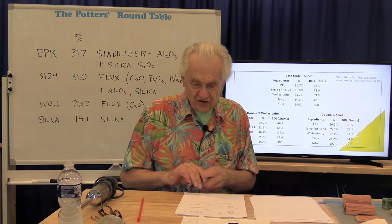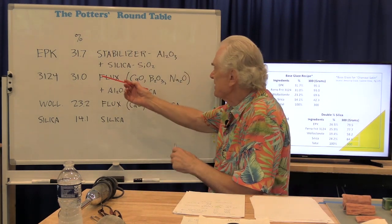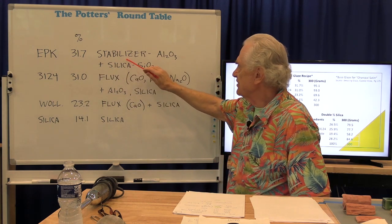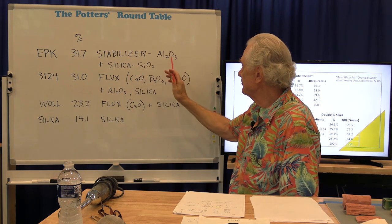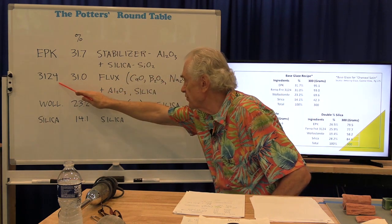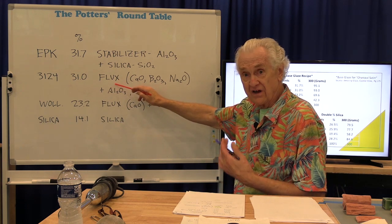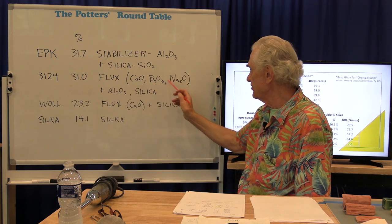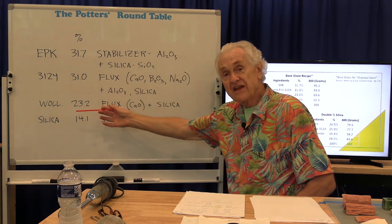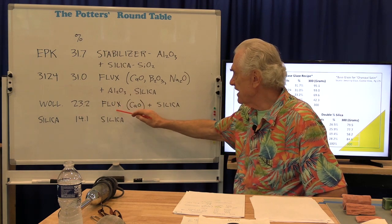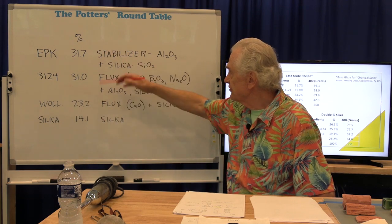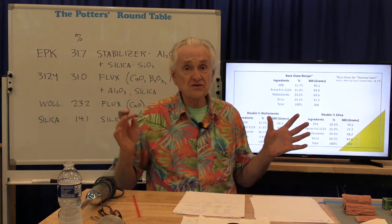Looking at our recipe: the EPK provides a stabilizer because it contains aluminum oxide (Al₂O₃), and it also contributes some silica. The Ferro Frit 3124 provides several fluxes — calcium oxide, boron oxide, and sodium oxide — plus some alumina as stabilizer and a significant amount of silica. Wollastonite, a naturally occurring calcium silicate mineral, provides calcium oxide as flux and additional silica. And finally, silica is the pure glass former. So the first three ingredients each contribute more than just one of the essential components needed for the glaze.